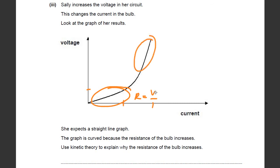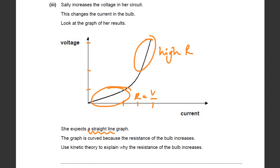Later on, the resistance is high, because here the change in V is quite large and the change in I is quite small. So here we've got a high resistance. She expects a straight line graph — that would be Ohm's law; if it was a straight line, you'd have an ohmic resistor. That's not what happens. The graph is curved because the resistance of the bulb increases.